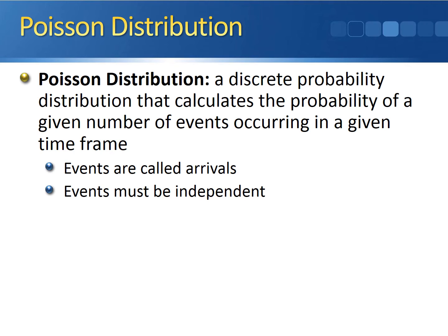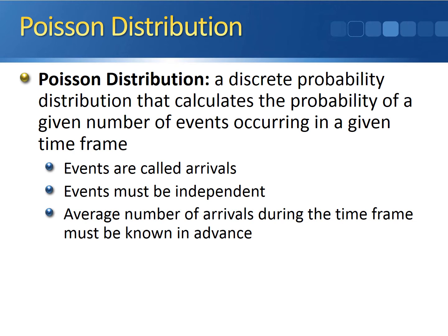Just like the binomial distribution, these events have to be independent from one another. In our previous example, one student going to office hours can't impact whether or not some other student decides to go to office hours. The average number of arrivals during the time frame also has to be known in advance, because this mean shows up in the equation of our Poisson distribution.